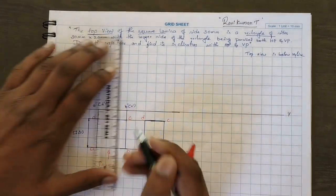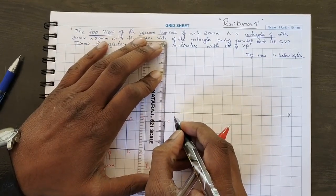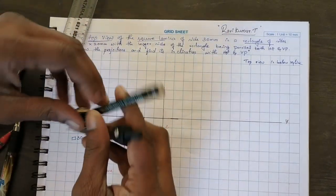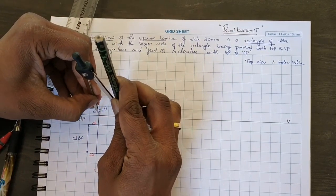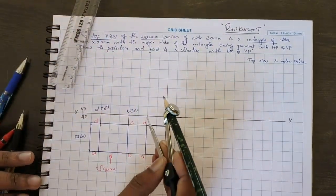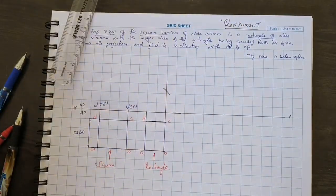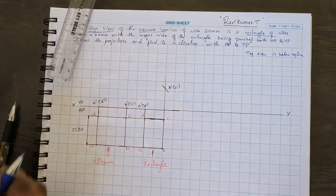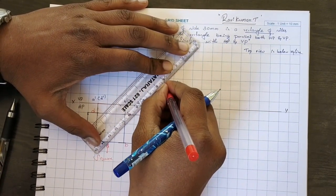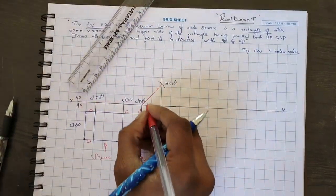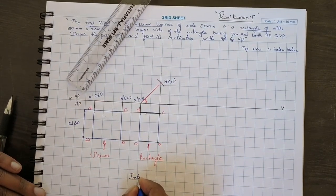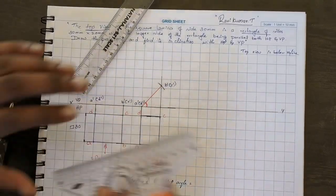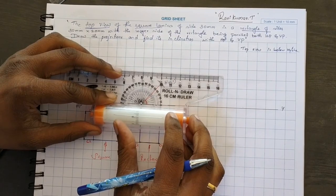Next step: extend the projection line upward to infinite distance, because I want to find out the inclination angle. Use a compass to find out the distance from A-dash to B-dash. From this point — A-dash and D-dash — cut an arc. This is your A-dash and D-dash point, and this is your B-dash and C-dash point. Now join these points. You have to find out this angle. This is the inclination to VP angle, and this is the inclination to HP angle.